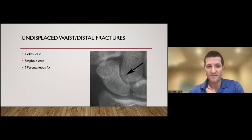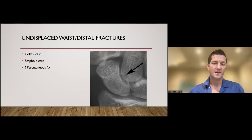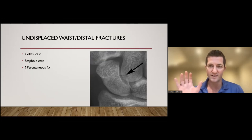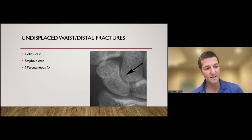Displaced fractures probably need to be fixed. Undisplaced waist fractures, we get a bit of confusion. I think most of them can probably be treated in a Colles cast. There's a lot of evidence now that there's no need for a scaphoid cast. You do not need to include the thumb. So just a Colles cast for a scaphoid fracture. The debate is whether or not we should be fixing up with percutaneous fixation, these undisplaced scaphoid waist fractures.